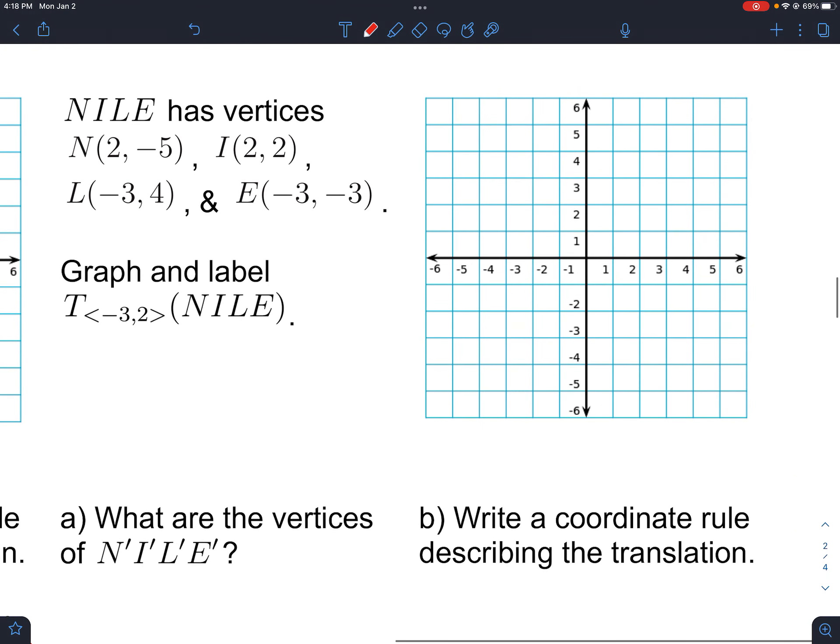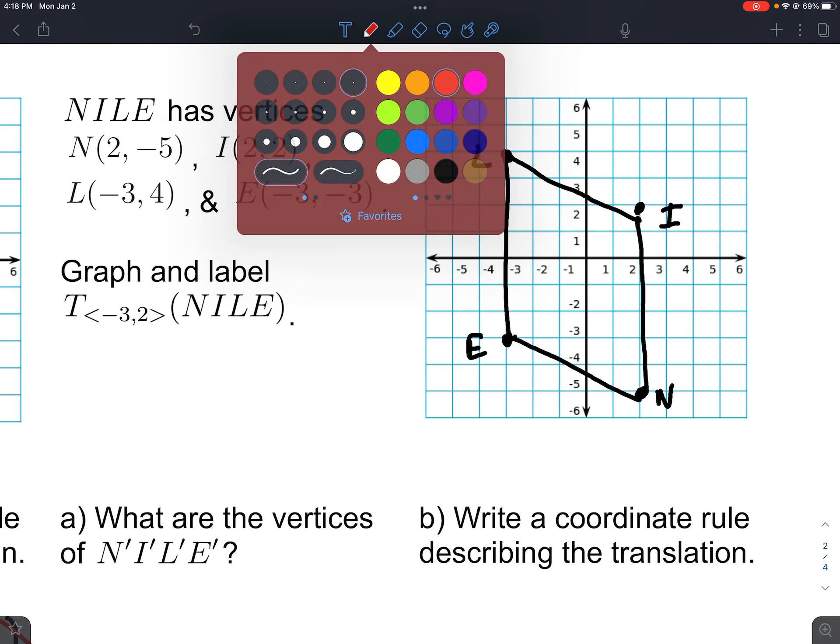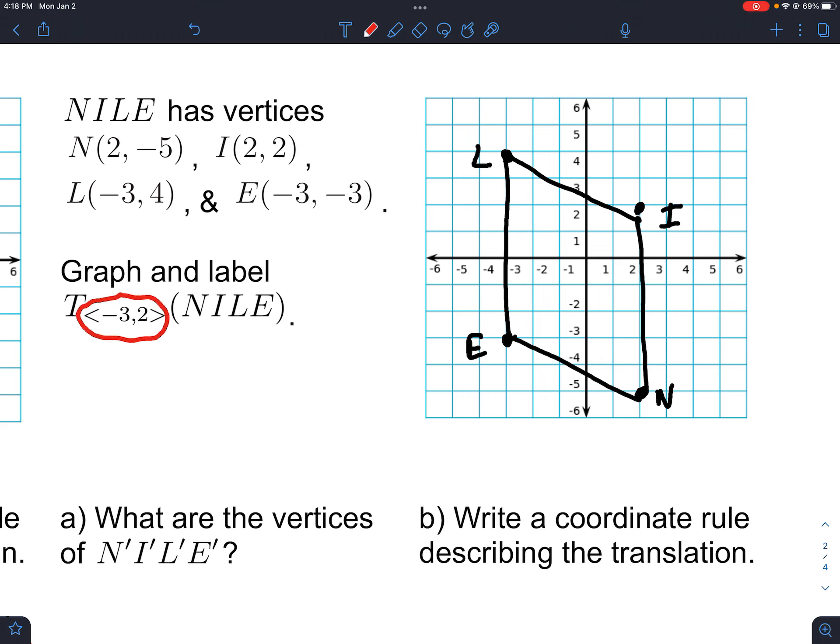Let's do it one more time. We got two shapes here - N, I, L, and E. We need to move it in this way. It's going to be left 3, so back 3, and up 2. Back 3, up 2, that's L prime. Back 3, up 2, that's I prime. From E and from N, same translation.